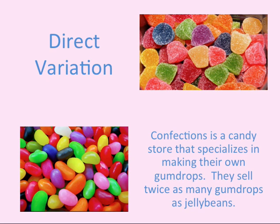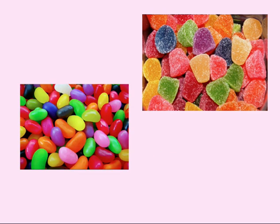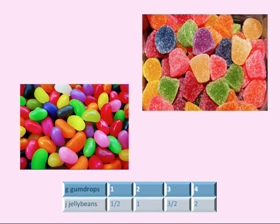Now I want us to consider another candy store called Confections, which specializes in making their own gumdrops. Because their gumdrops are so good, they sell twice as many pounds of gumdrops as jelly beans. In this case, gumdrops or the number of pounds of gumdrops is always larger, twice as large as the number of pounds of jelly beans. So the appropriate equation here would be J is equal to one-half times G.